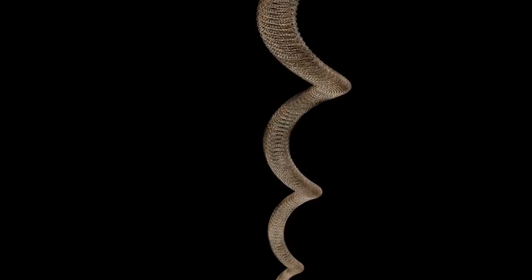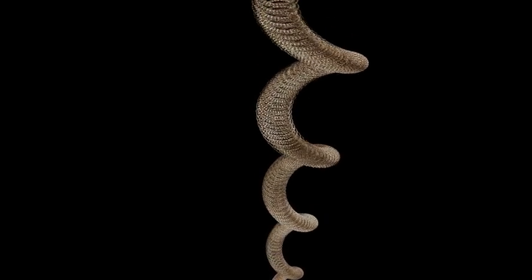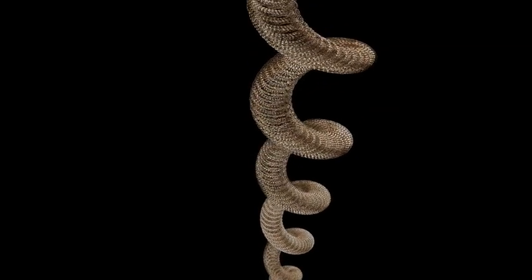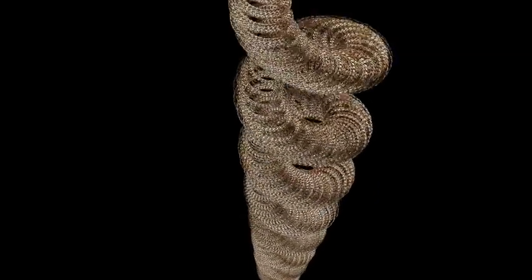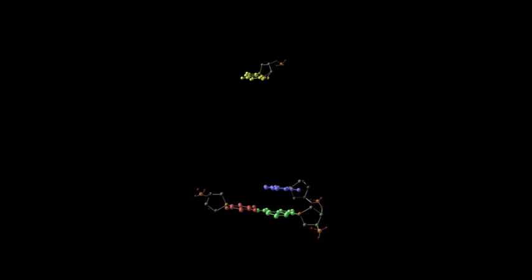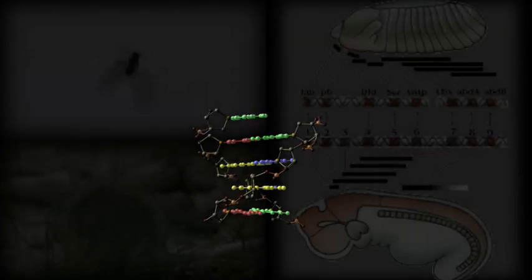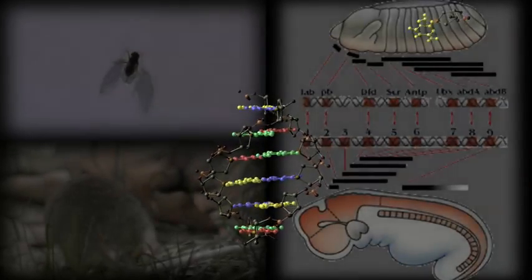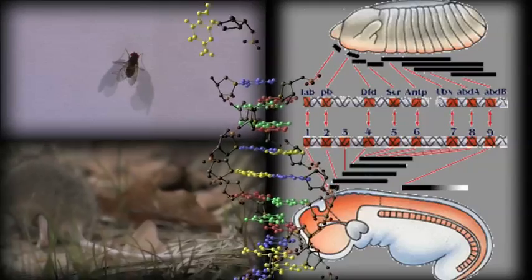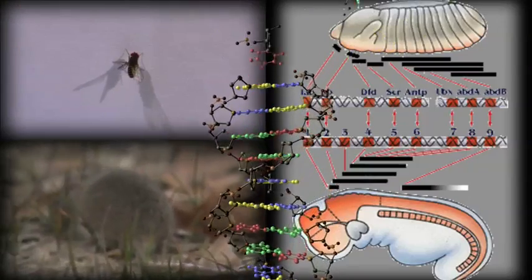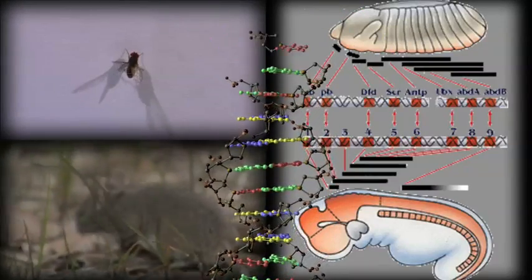And of course it is not just physical structures themselves, but also the genes which control development. Many of the genes controlling the development of human embryos are exactly the same genes that control the development of other creatures. In fact, some genes, like the Hox gene, which regulate the location and shape of limbs and parts, are able to control the development of creatures as different as flies and mammals.